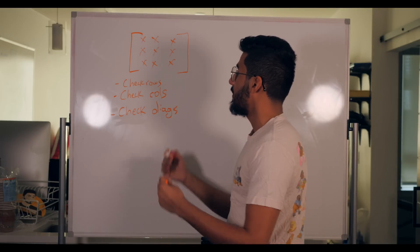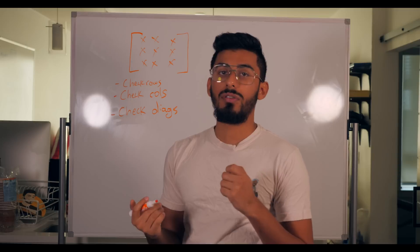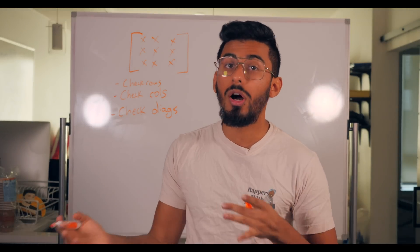And then I'll create a function called check diags. So now I'll have three different functions. One function can check a row and tell you whether there's a win, somebody has won or not.